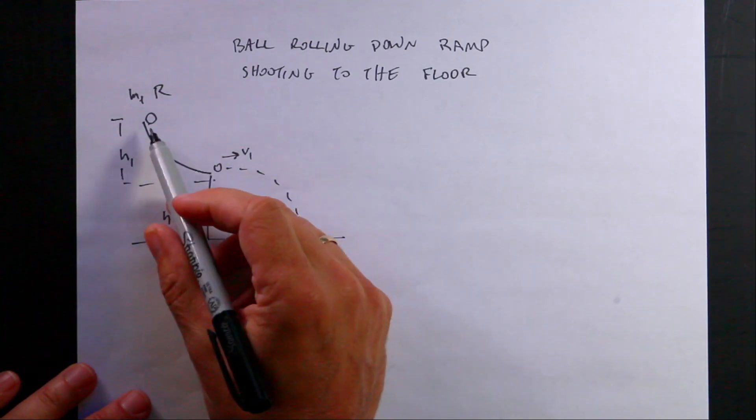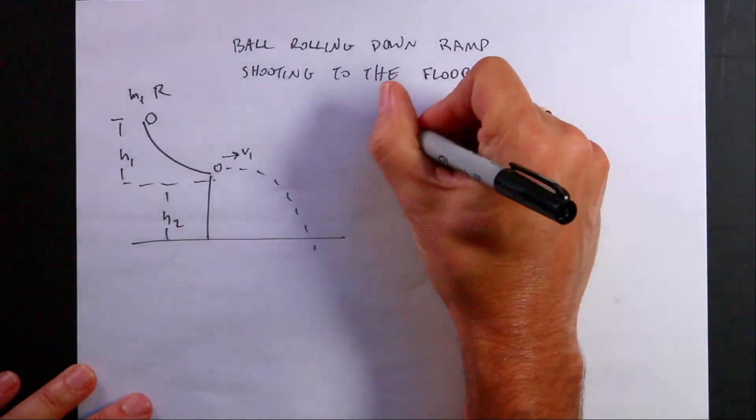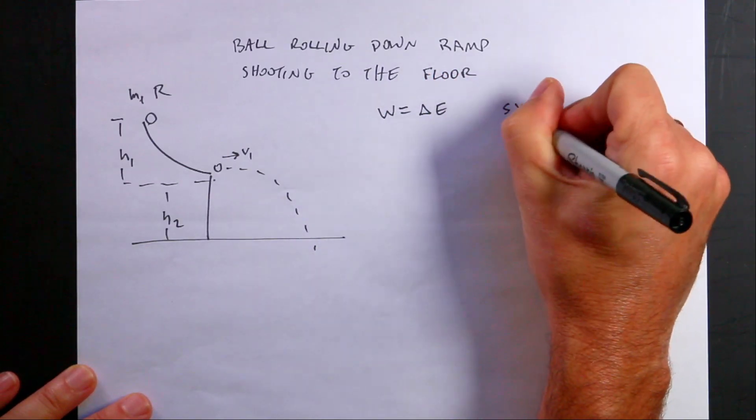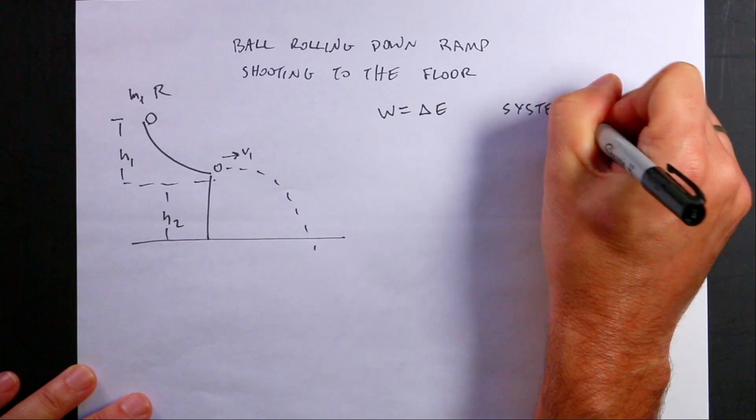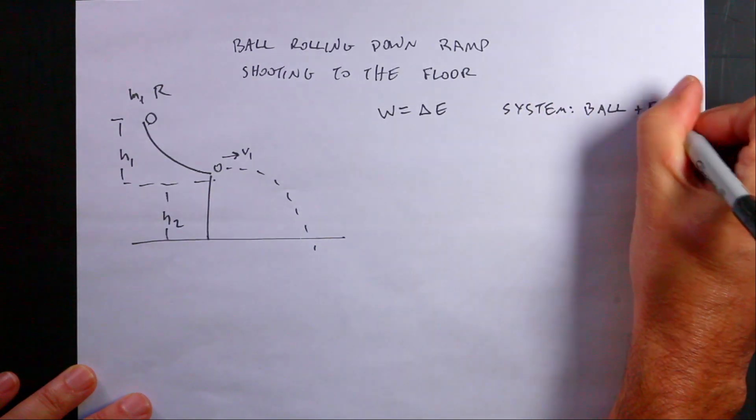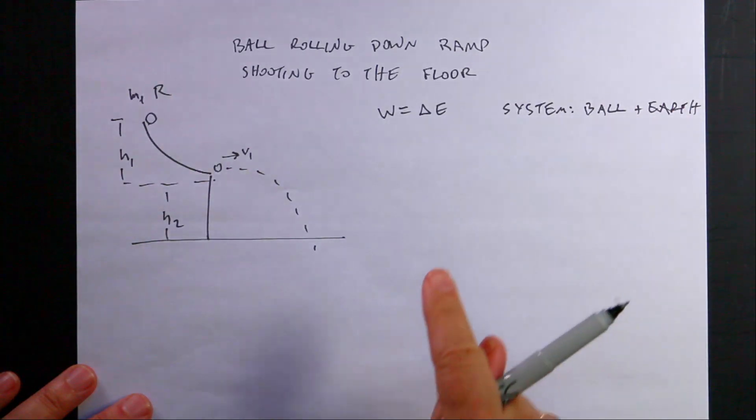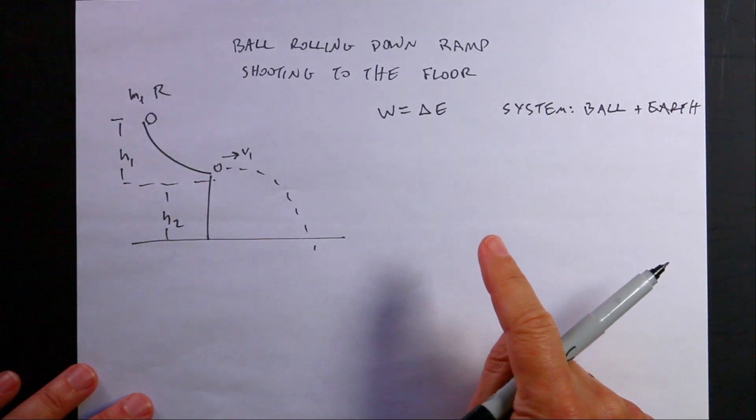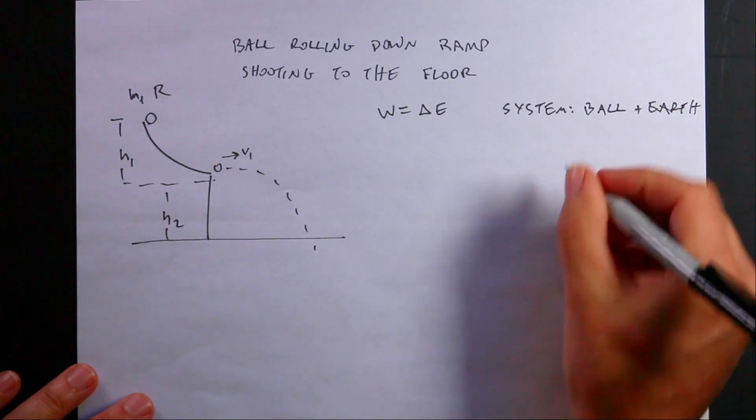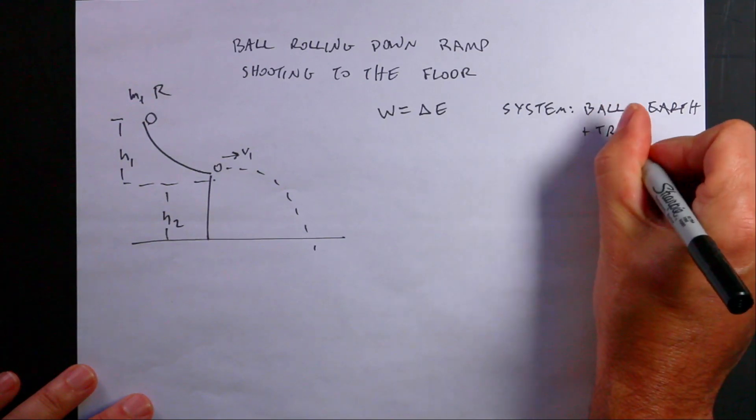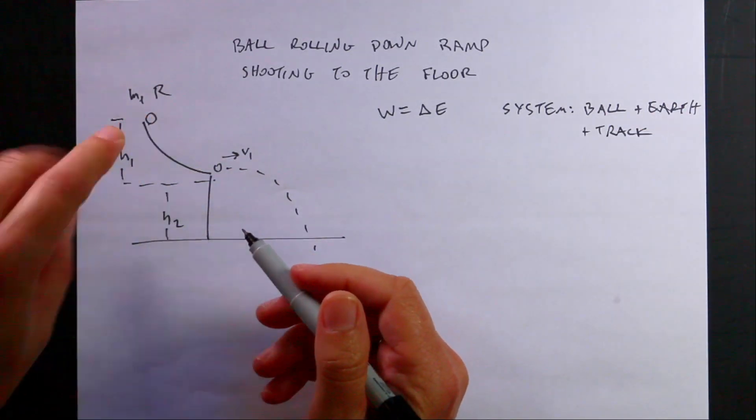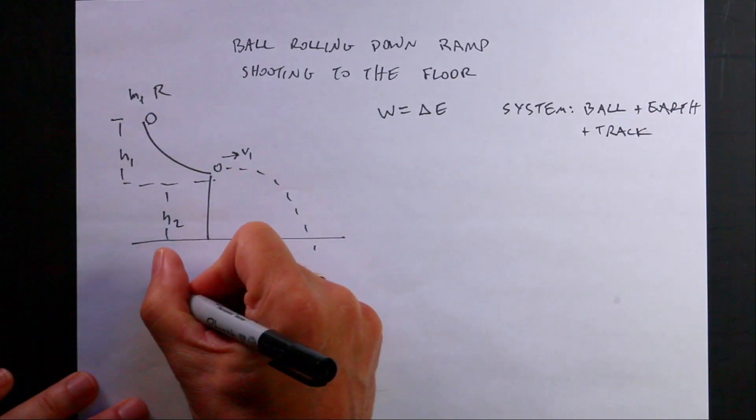Okay, so let's start again with the work energy principle just like before. I say work equals the change in energy and my system is the ball plus the earth. I guess plus the track. Should I include the track? I think technically I have to include the track, because there's going to be three forces on the ball. Let me draw a bigger picture.